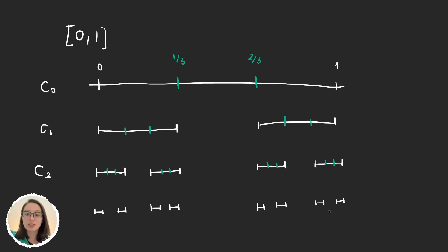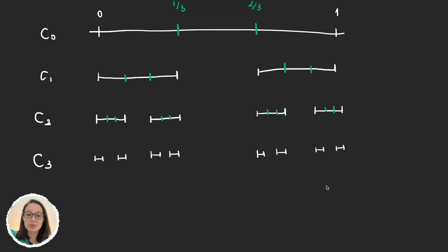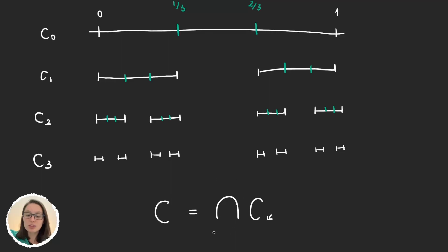You can see that our set is getting smaller and smaller. Each of these is a step in the construction of the Cantor set. We define C, the Cantor set, as the intersection over all these steps — dividing in thirds and removing the middle third up to infinity. So we intersect from k equals one up to infinity all these sets. This limit set is called the Cantor set.